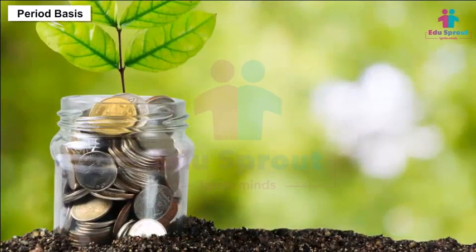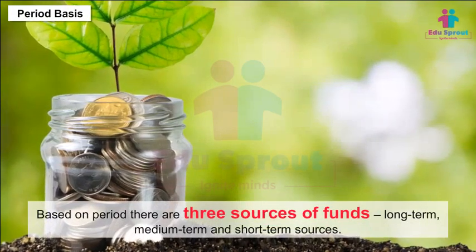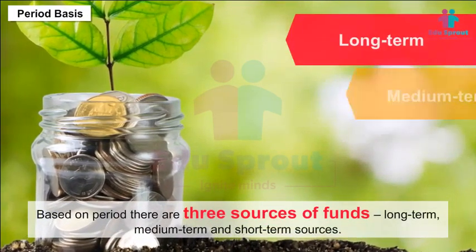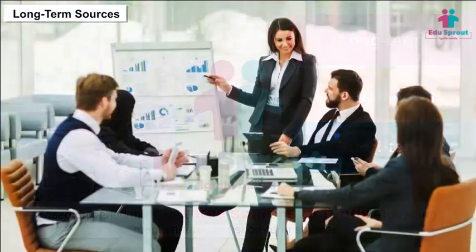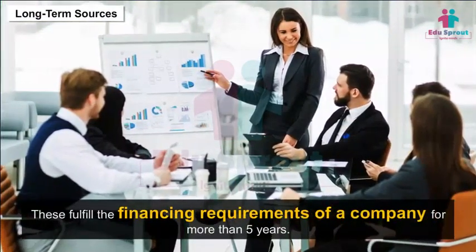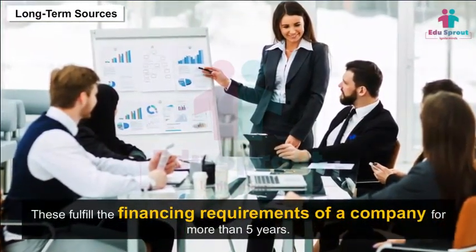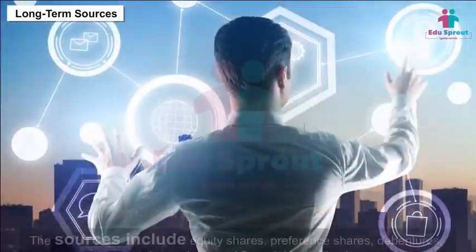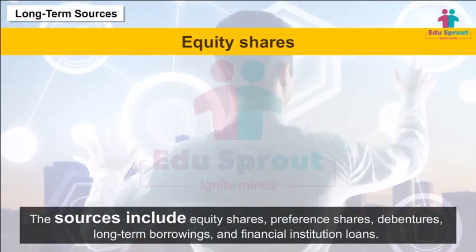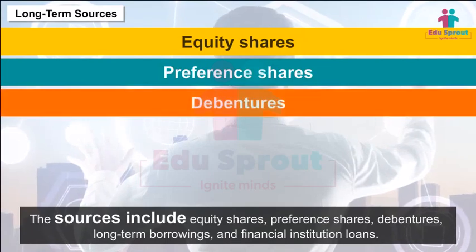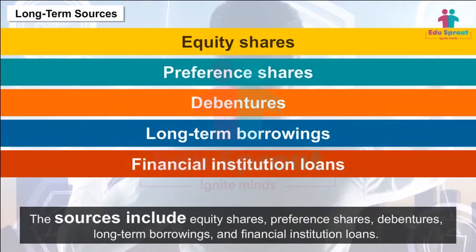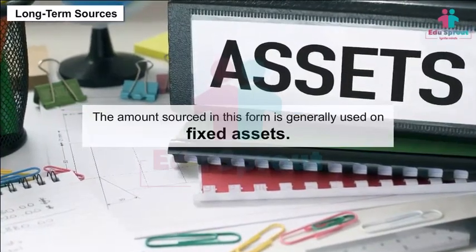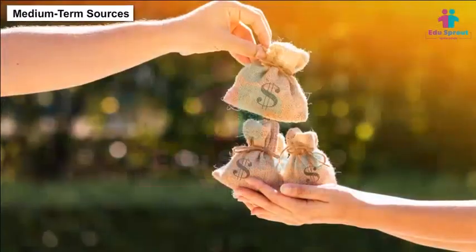Period Basis: Based on period, there are three sources of funds — long-term, medium-term, and short-term sources. Long-term sources fulfill the financing requirements of a company for more than five years. The sources include equity shares, preference shares, debentures, long-term borrowings, and financial institution loans. The amount sourced in this form is generally used for fixed assets.